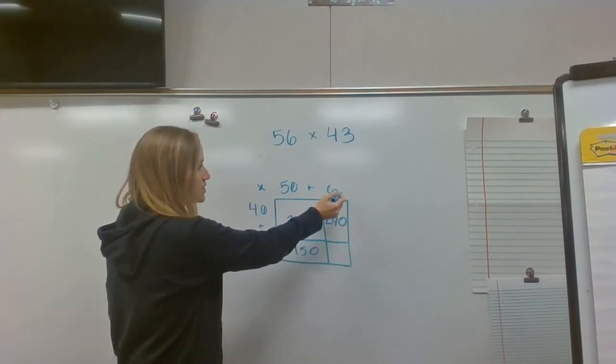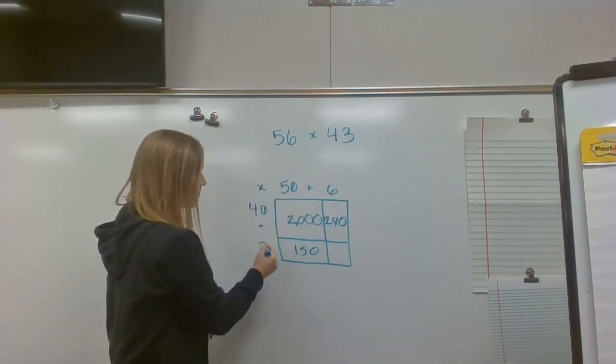And then I need to move to my one place. No zero there, no zero there, so I do six times three, and that's 18.